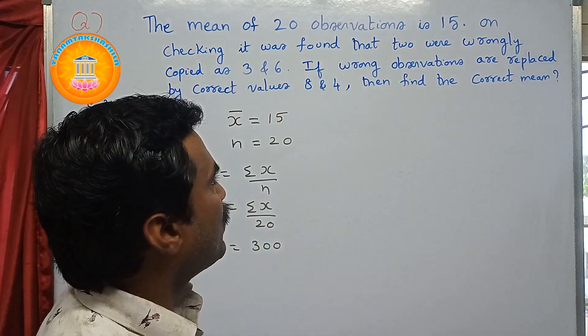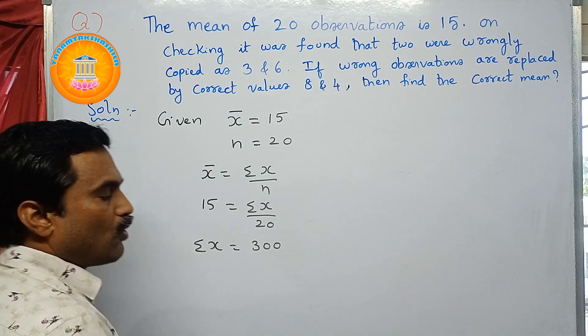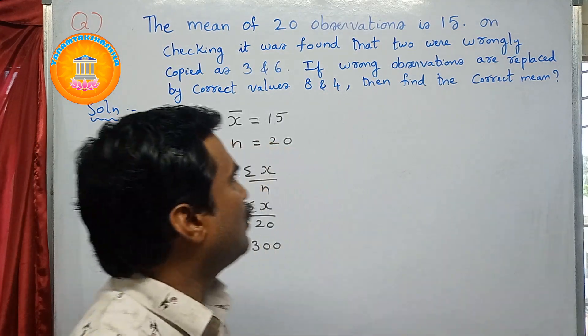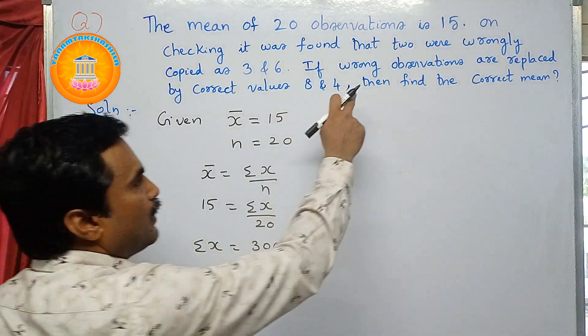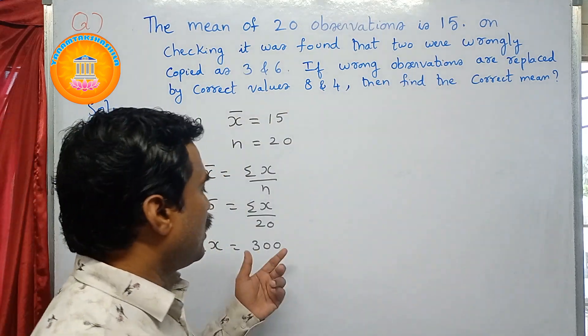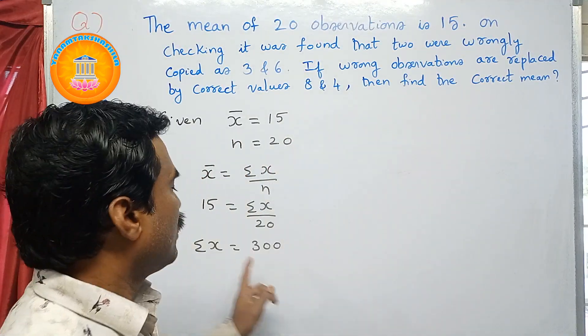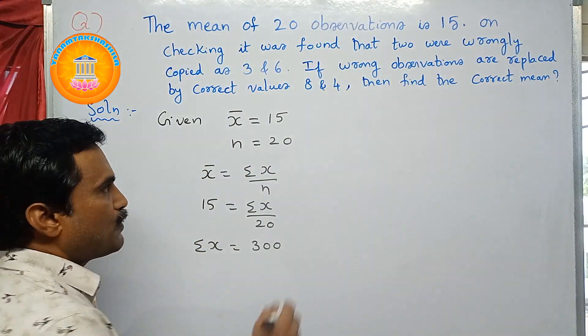So here in this problem, they have given the wrong observations are 3 and 6. That means from this total, that is 300, you have to subtract these two values, that is 3 and 6. And then if wrong observations are replaced by correct values 8 and 4, so first you need to subtract 3 and 6, then you have to add 8 and 4. Then you will get the correct value of sum.